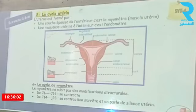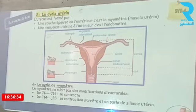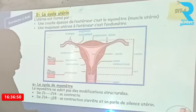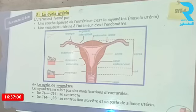Au niveau de l'utérus, on a un cycle qui se produit. L'utérus est formé par une couche externe, le myomètre — muscle utérin — et une muqueuse utérine à l'intérieur, l'endomètre, avec une cavité et un corps de l'utérus. Le myomètre est une couche épaisse de muscle qui effectue seulement deux mouvements : contraction ou relâchement. Il ne subit pas de modifications profondes de structure. De J1 au 4e jour, il se contracte de façon rythmique. Du 4e au 28e jour, sa contraction s'arrête — c'est le silence utérin.